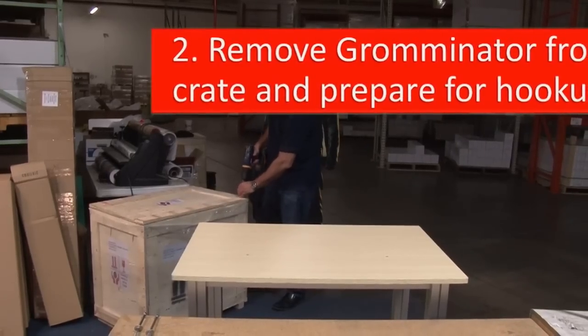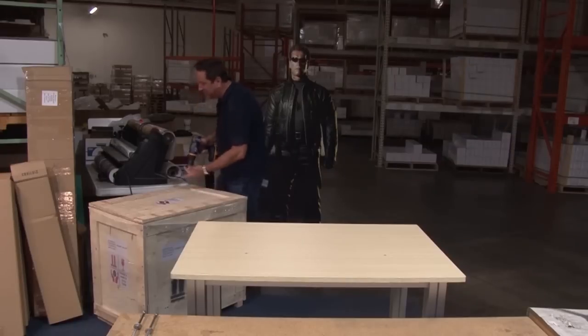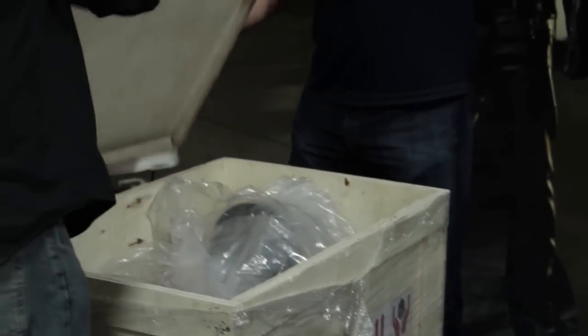Step two. Remove grominator from crate and prepare for hookup. Open crate. Remove screws in the top panel of the crate. Remove lid from crate.